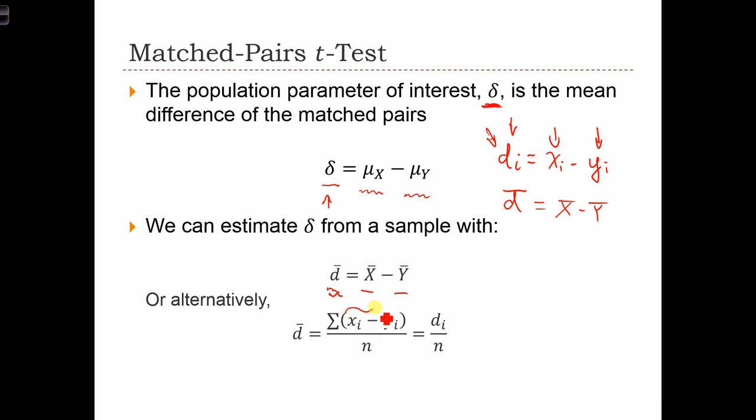And we can see it either as the difference between the two variable means or we can calculate these di's. So here's the di right there. And all we're going to do is take the average di. So we sum across all di's and divide by n. This should have a sum there. So it equals the sum of di over n. And we're going to use this d bar as an estimate of this delta.